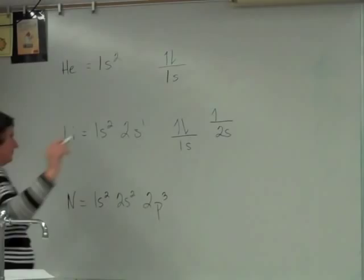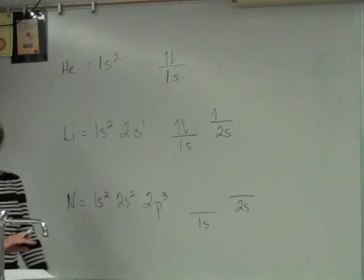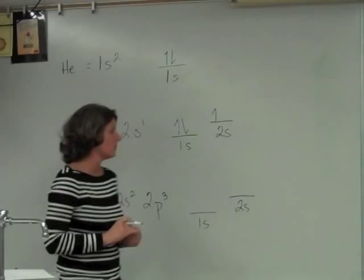1s, 2s. Now, if a quantum level has p orbitals, how many p orbitals does it have? Three. And they're in a little bit higher of an energy state than the s orbitals. So I'm going to put three p orbitals here: one, two, three.